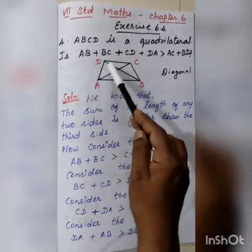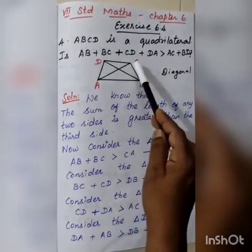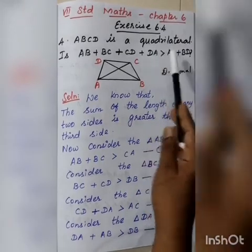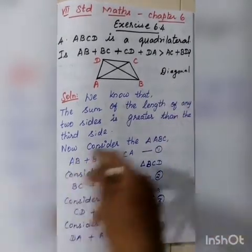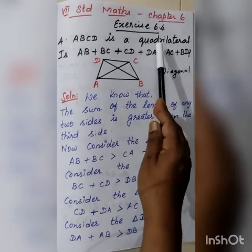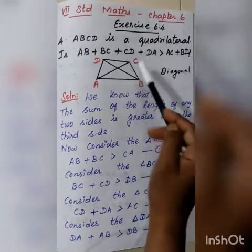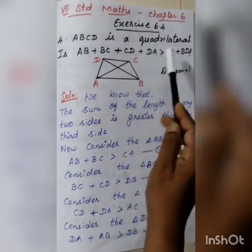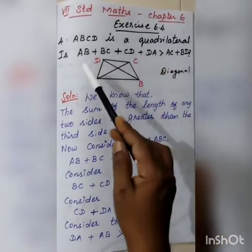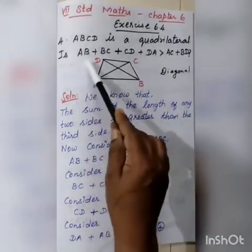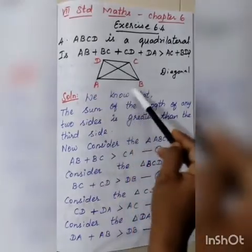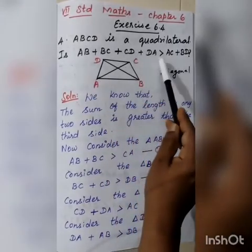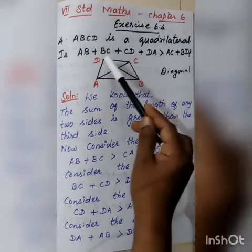ABCD is a quadrilateral. The question is: Is AB plus BC plus CD plus DA greater than AC plus BD? A quadrilateral means a four-sided polygon — a closed figure with four sides.